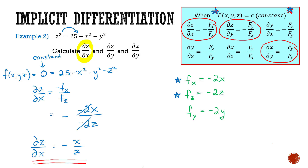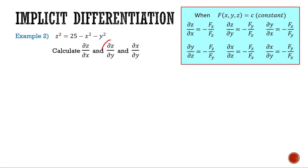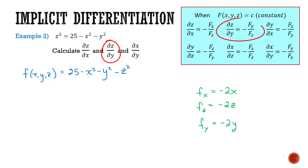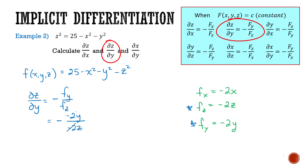Now I've solved for ∂z/∂x. Let's try solving for ∂z/∂y. From the previous part, I've already set up f(x, y, z) = 25 − x² − y² − z² and determined f sub x, f sub z, and f sub y. To solve for ∂z/∂y, I use negative f sub y divided by f sub z: that's negative (−2y) divided by (−2z). The negative 2's cancel, leaving ∂z/∂y = −y/z.